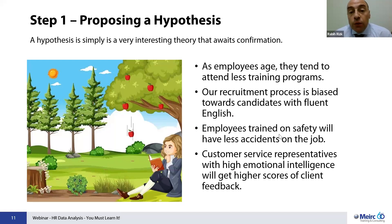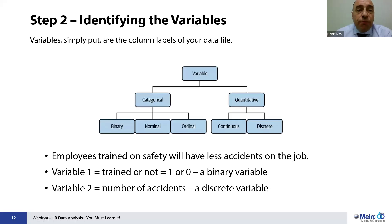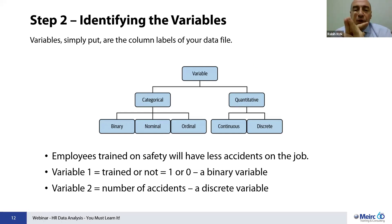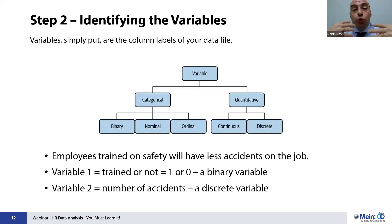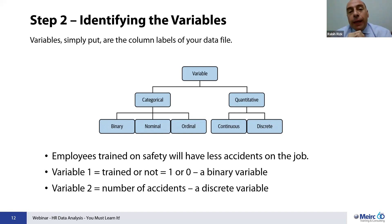Every one of us comes up with many hypotheses on a daily basis, from all aspects of life. But those that are interesting enough, and that — if confirmed or negated — would solve a problem or uncover a reality: these are the ones that should undergo an analytics study. Step number two is identifying the types of variables included in the hypothesis. In statistics, one type you may be familiar with is the binary variable, which takes only two inputs — like men or women, cold or hot, stay or resign, attending or not.